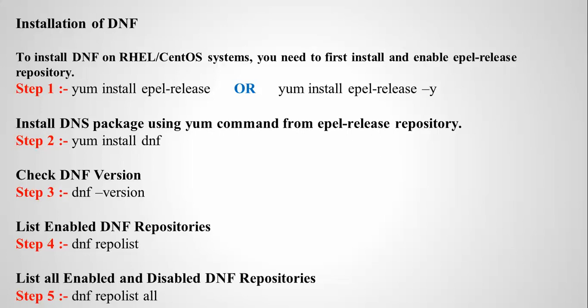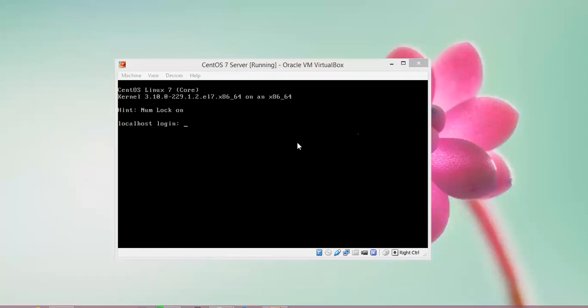For installation of DNF on a Red Hat or CentOS system, you need to first install and enable the EPEL repository. Step 1 is the command to install and enable the EPEL repository. Step 2 is to install the DNF package using the YUM command. Then we check the DNF version, list enabled DNF repositories, and list all enabled and disabled DNF repositories.